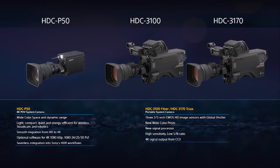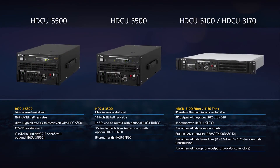This new camera is accompanied by the HDC P50, a compact 4K HD and HDR point-of-view camera; the HDC 3100, a full HD CMOS sensor camera with global shutter and fiber optic output; and the HDC 3170 with digital Tri-X output. We're supporting these camera heads with a new line of camera control units configurable for IP live production systems over ST2110 in 4K or HD.